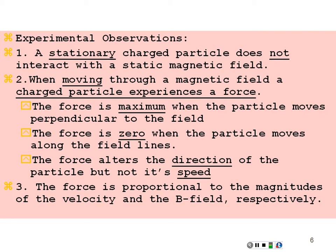The force is proportional to the magnitudes of both the velocity and the magnetic field, which we represent with the symbol B. Why B? We're already using M for mass, and B is kind of like an M turned on its side with a bar — so maybe that's why. That's the explanation, and I'm sticking to it.